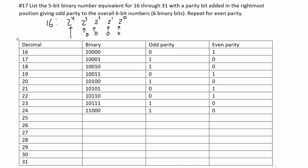25 is just 24 plus 1, so we have 1 1 0 0 1. We have an odd number of ones, so a 0 in our odd parity and a 1 in our even parity.